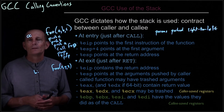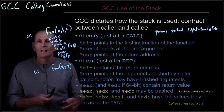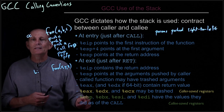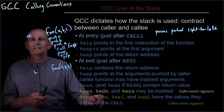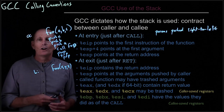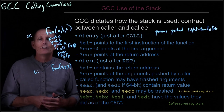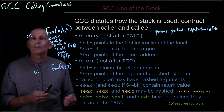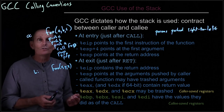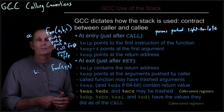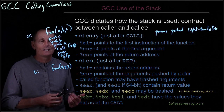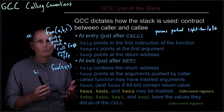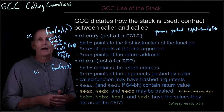On the other hand, EBP, EBX, ESI, and EDI will all retain the values they had at the time of the call. So if the callee needs to use any of those registers, it's the callee's responsibility to save them — presumably on the stack — before modifying them.